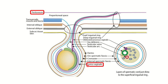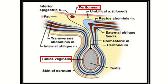Continuing the layers: after cremaster muscle and fascia comes the internal spermatic fascia, and then the tunica vaginalis — then the testicular layers begin. So: skin, dartos muscle, external spermatic fascia, cremaster muscle and fascia, internal spermatic fascia, and tunica vaginalis. Tracing this structure upward, we can see that tunica vaginalis corresponds to and is a continuation of the peritoneum.